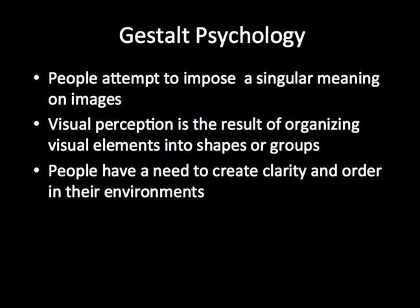Philosophically, the question we should be asking is: what do you see, rather than what are you looking at? Visual perception is the result of organizing visual elements into shapes or groups. Gestalt theory says there is an unconscious, automatic process at work — a process of compression and reduction of visual information — so people tend to group things together and see things in shapes, lines, or groups.